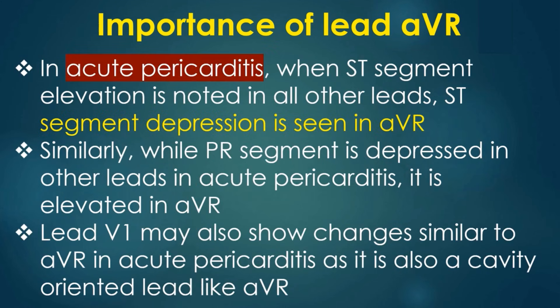In acute pericarditis, when ST segment elevation is noted in all other leads, ST segment depression is seen in AVR. Similarly, while the PR segment is depressed in other leads in acute pericarditis, it is elevated in AVR. Lead V1 may also show changes similar to AVR in acute pericarditis, as it is also a cavity-oriented lead like AVR.